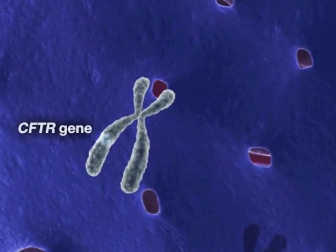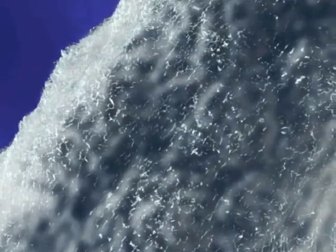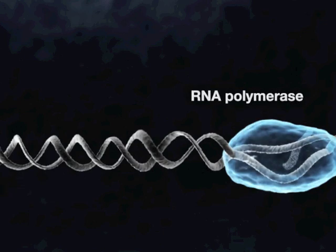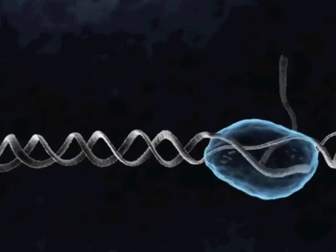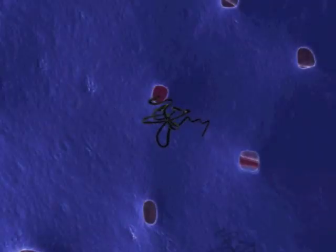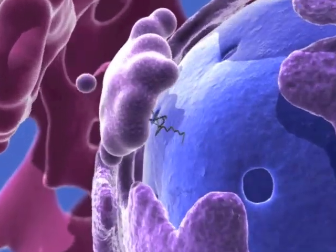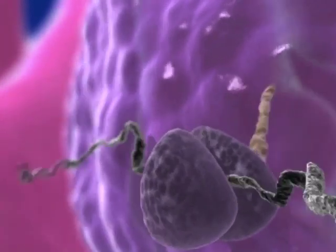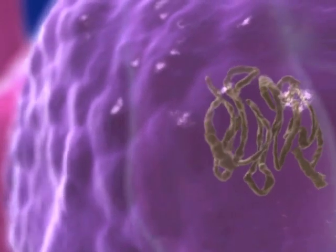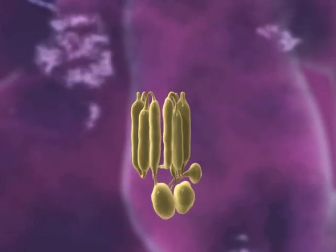The CFTR gene is located on the long arm of chromosome 7. The DNA is read and transcribed to messenger RNA, during which the introns are spliced out. The messenger RNA strand exits the nucleus and travels to the ribosome, where it is translated to the immature CFTR protein product. In the endoplasmic reticulum, or ER, other proteins called chaperones help to fold the protein.